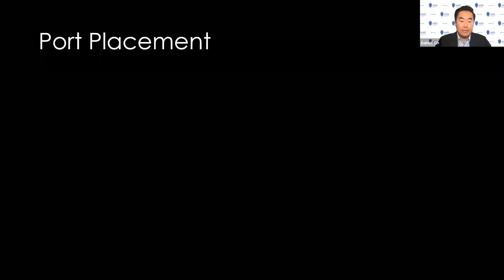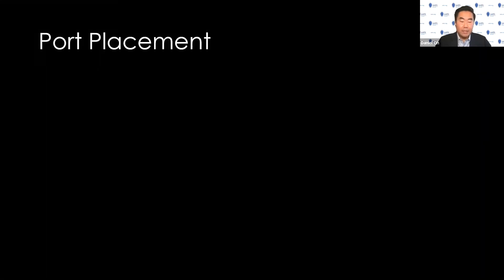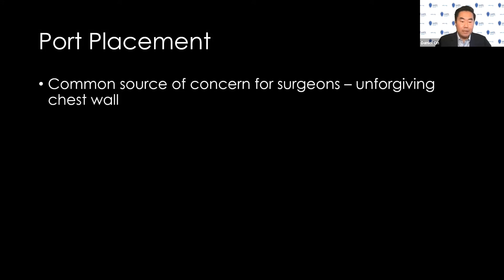Port placement is a very important topic for all surgeons in all specialties, but in thoracic surgery in particular. It is a common source of concern for surgeons, especially those learning robotic surgery. This is because the chest wall is unforgiving due to the rigid and inflexible nature of the ribcage. This is true for thoracotomy and for VATS, and there is concern that this is true for robotics.